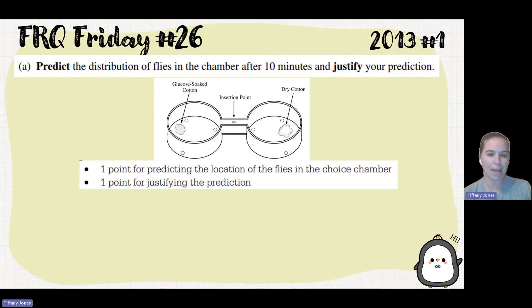Here they're giving you a point for predicting the location and then for justifying that prediction. So it seems that as long as you made a prediction, you got a point here, and as long as you justified that prediction appropriately, you got that point. Now this is a really old exam question, and now the predictions have to be actually sound.